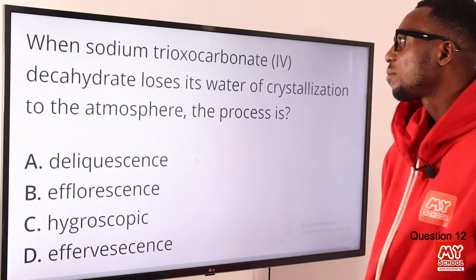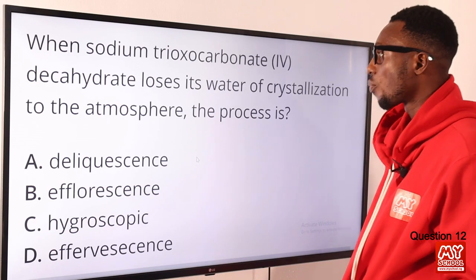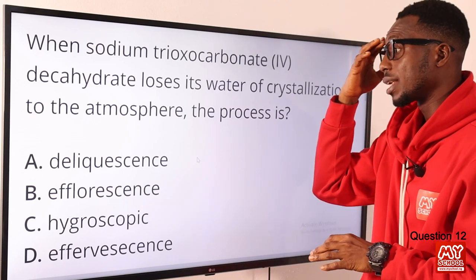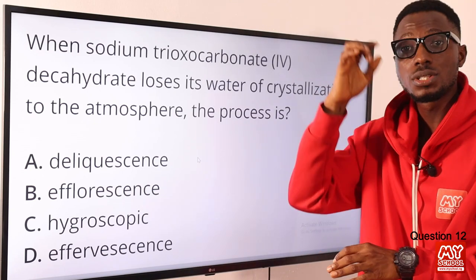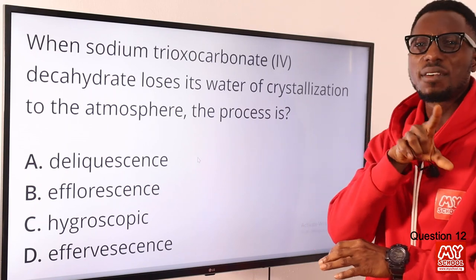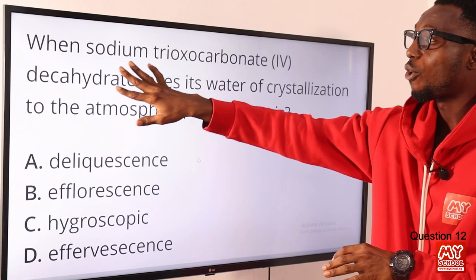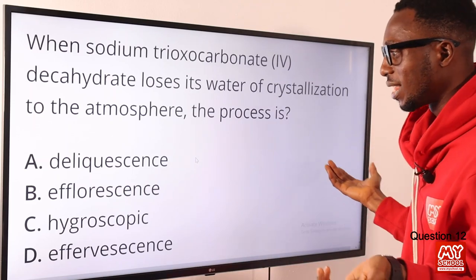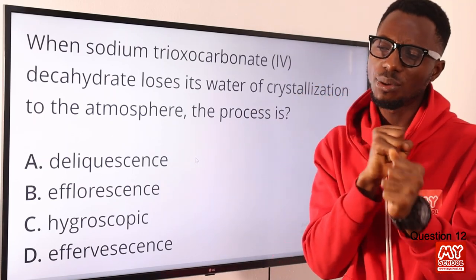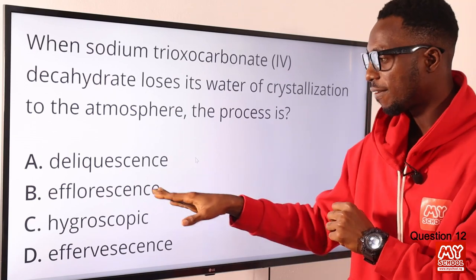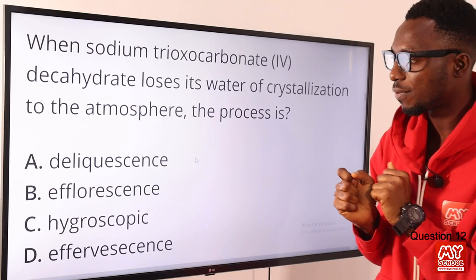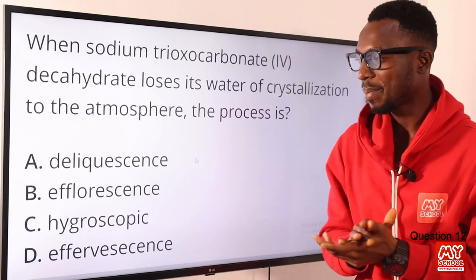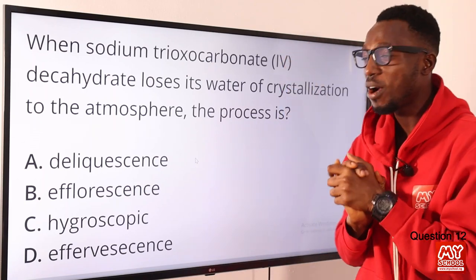Question 12: when sodium trioxocarbonate(IV) decahydrate loses water of crystallization to the atmosphere, the process is referred to as efflorescence. Another example is sodium tetraoxosulfate(VI) — also known as Glauber's salt or washing soda. Deliquescence is when salts absorb large amounts of moisture from the atmosphere and turn into solution. Hygroscopic substances also absorb moisture but just turn sticky. Efflorescence refers to the loss of water of crystallization. So the correct option is option B for efflorescence.